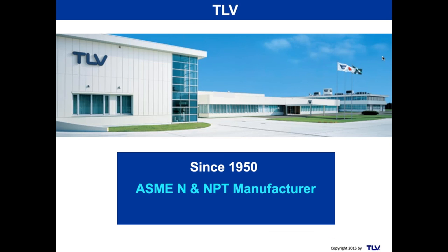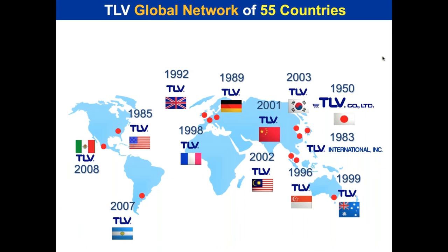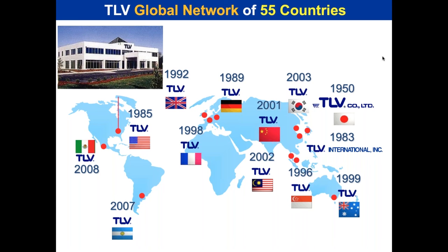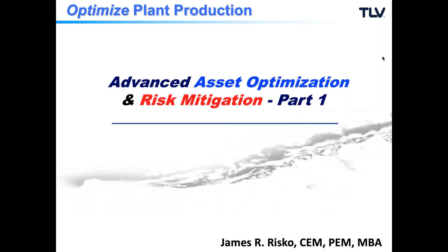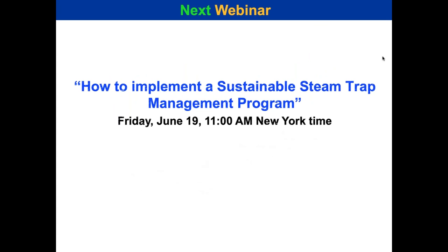TLV has been in business since 1950. We are an ASME N and NPT manufacturer — qualified to make nuclear-grade products, the highest rating — with all other types of certifications, and have been making nuclear products for over 50 years. U.S. headquarters for TLV Corporation is in Charlotte, North Carolina. This concludes Part One of the webinar on advanced asset optimization and risk mitigation for refineries and chemical plants — covering coker systems, flares, turbines, heat exchangers, and reboilers. Stay tuned for Part Two.